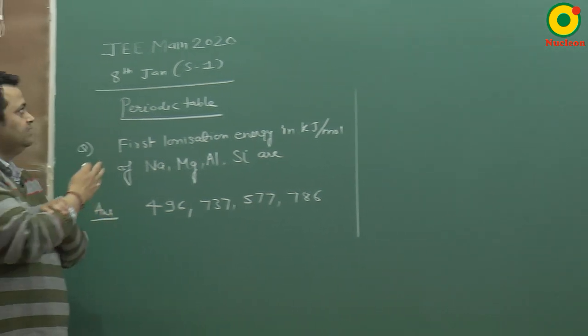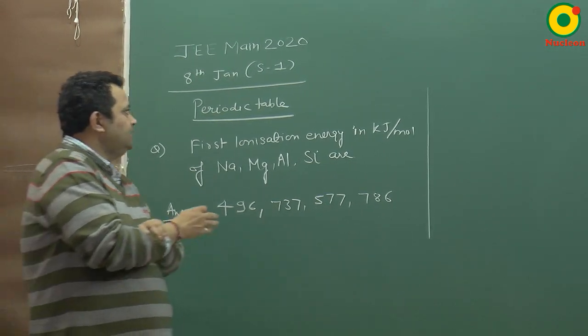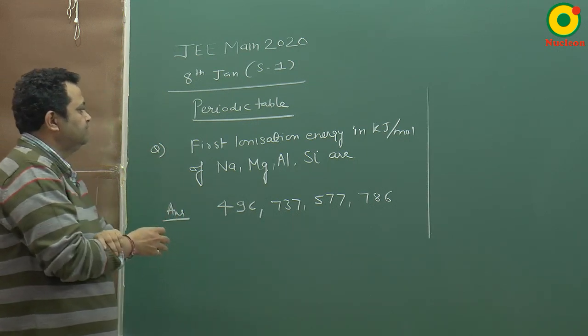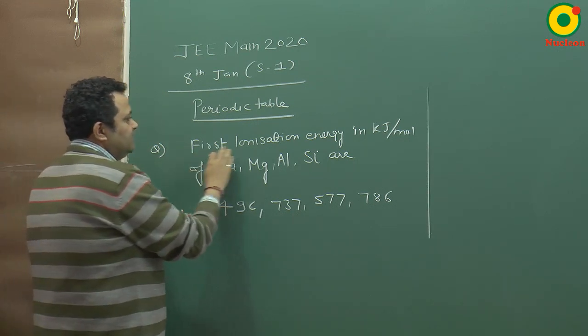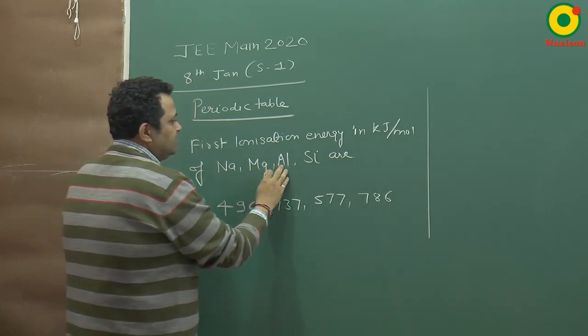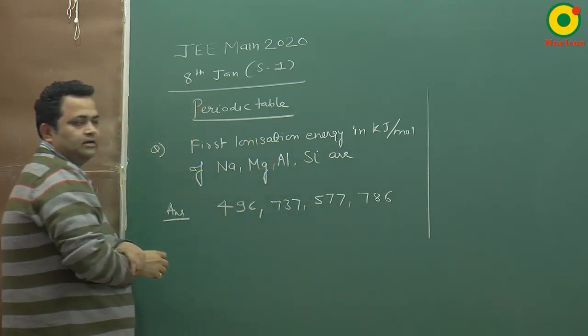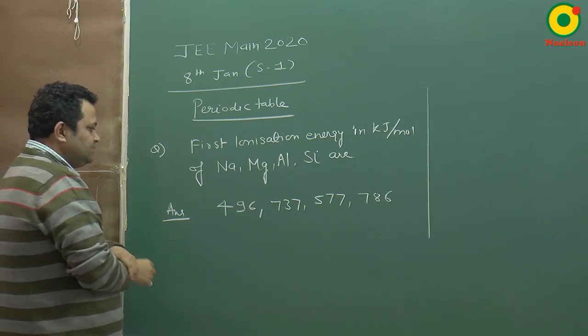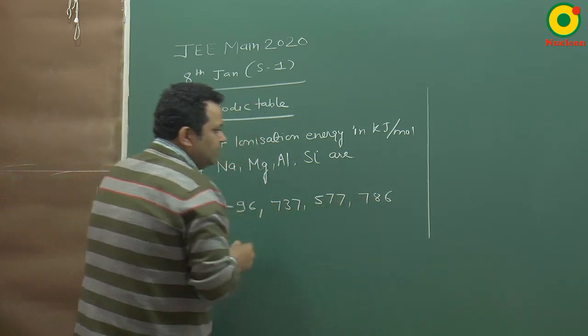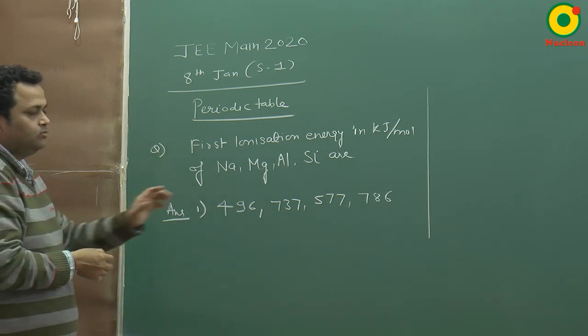Today we are going to discuss the JMAN 2020 8th January paper. The question is from periodic table, and the question is first ionization energy in kilojoule per mole for sodium, magnesium, aluminium, and silicon. Now actually, we have given the option in this way, we have given the numerical data and we choose the right option.